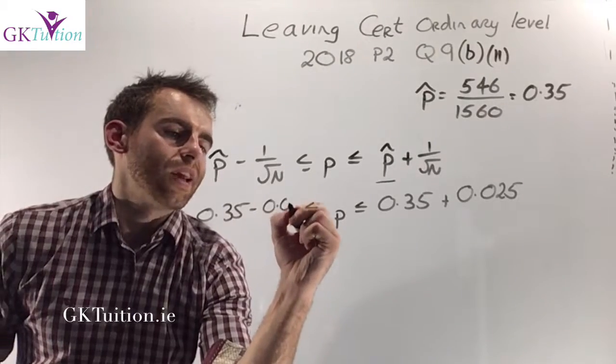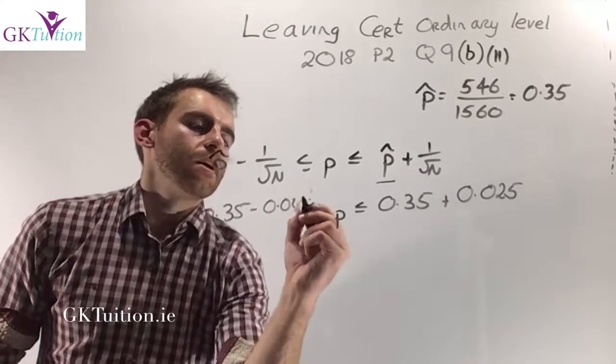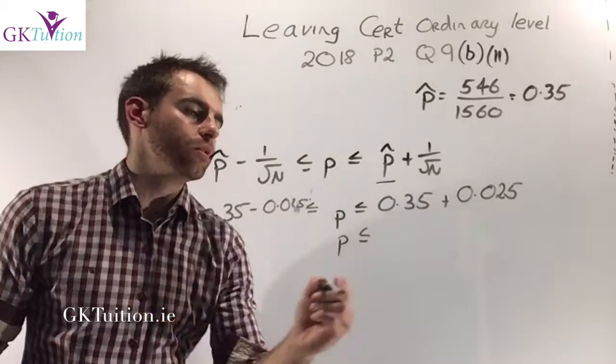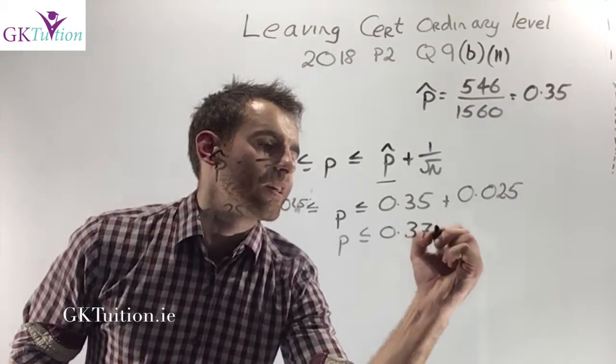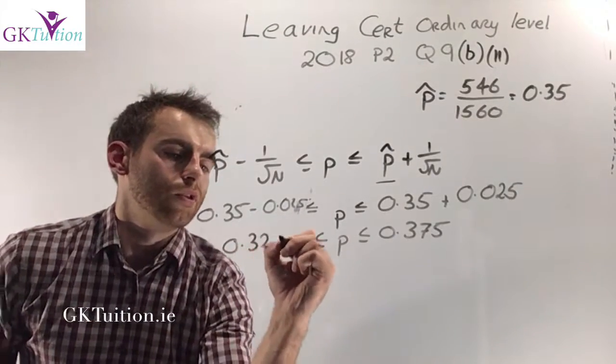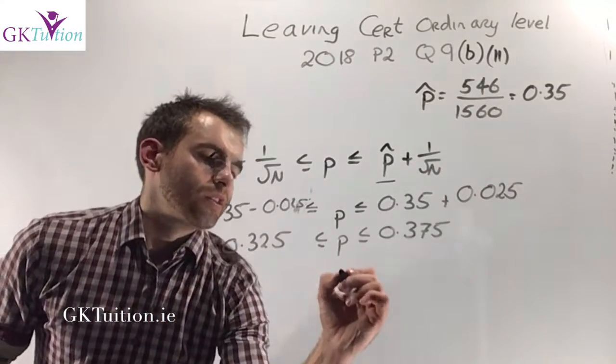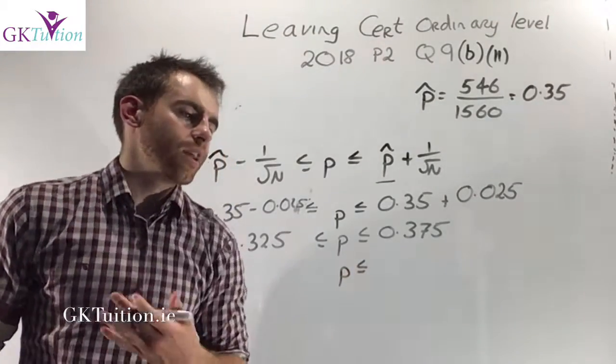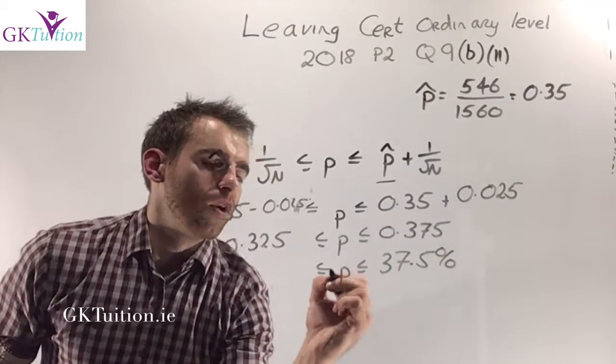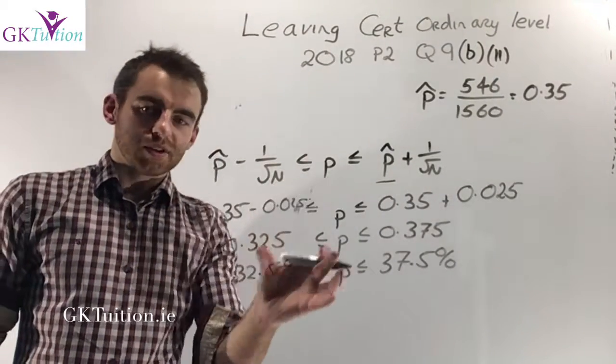In this case all I need to do now is add up my figures. 0.35 plus 0.025 gives me 0.375. On the lower end I get 0.325. But the question asked me to get this as a percentage. To write it as a percentage I multiply by 100. That works out as 37.5% and on the lower end I get 32.5%.